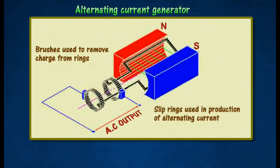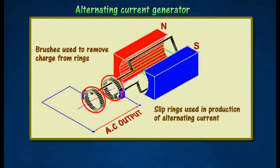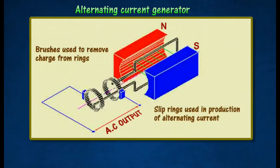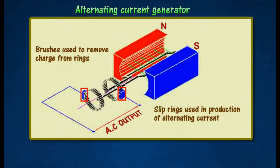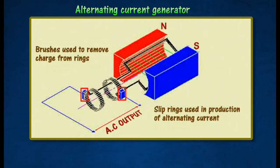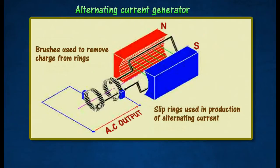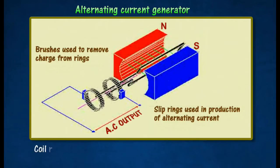The end of the coil are joined to two copper slip rings which rotate with the coil. The coil is linked to an external circuit through two carbon brushes which are pressed against the slip rings.